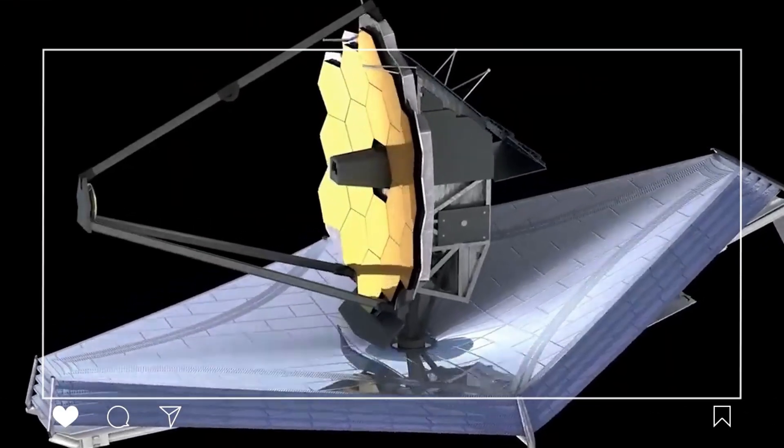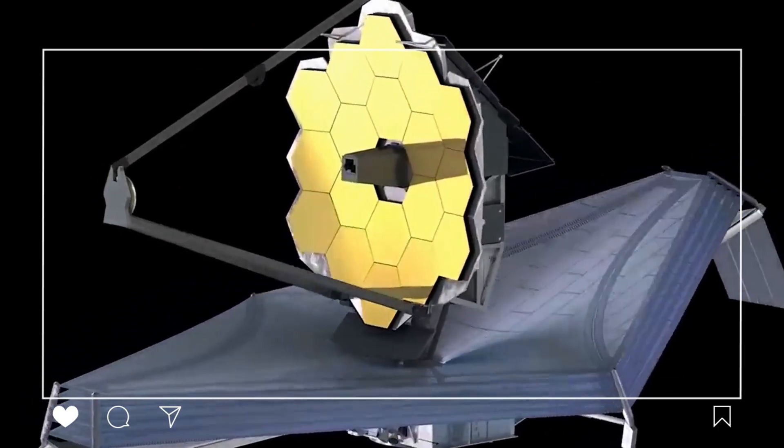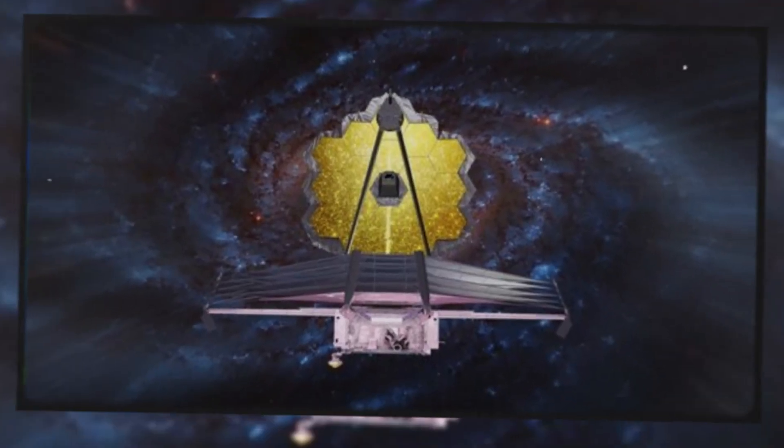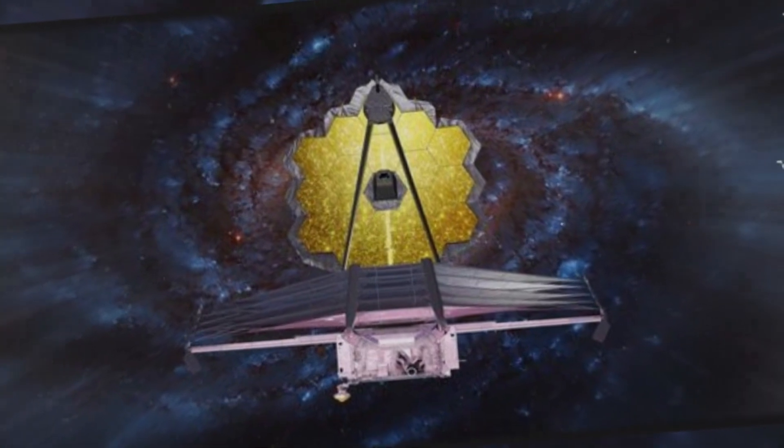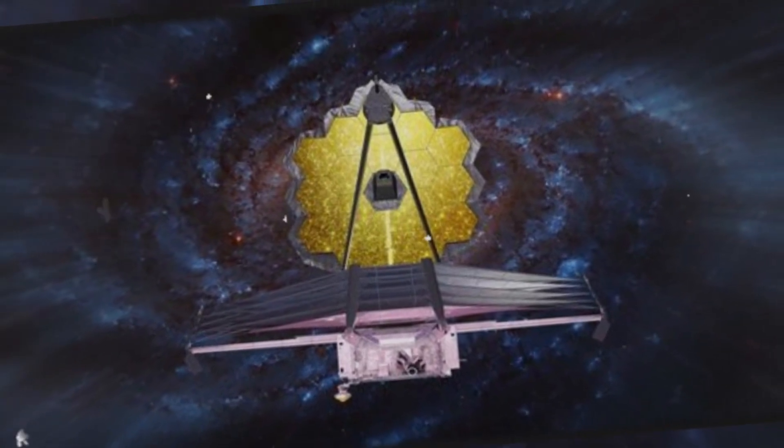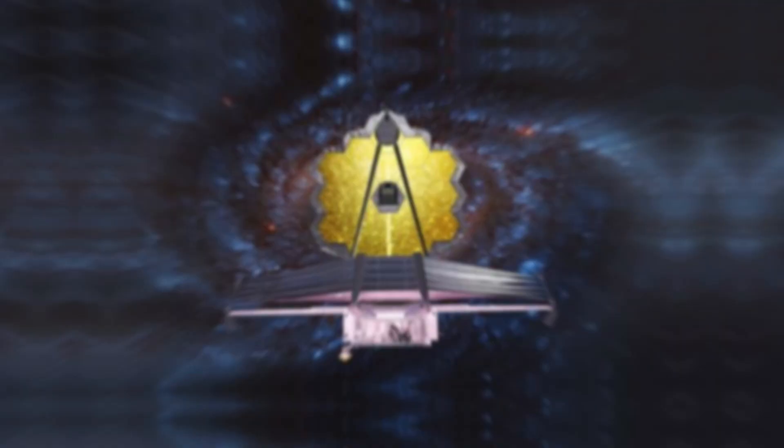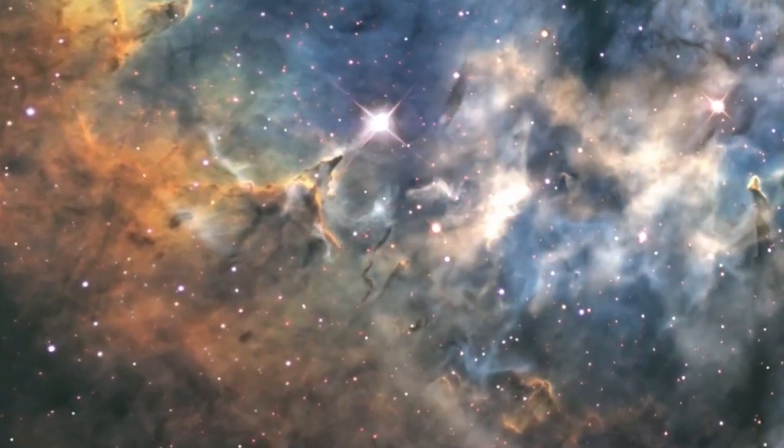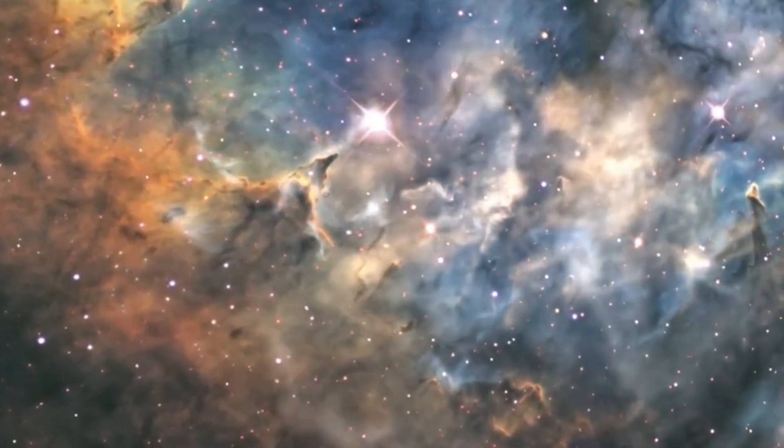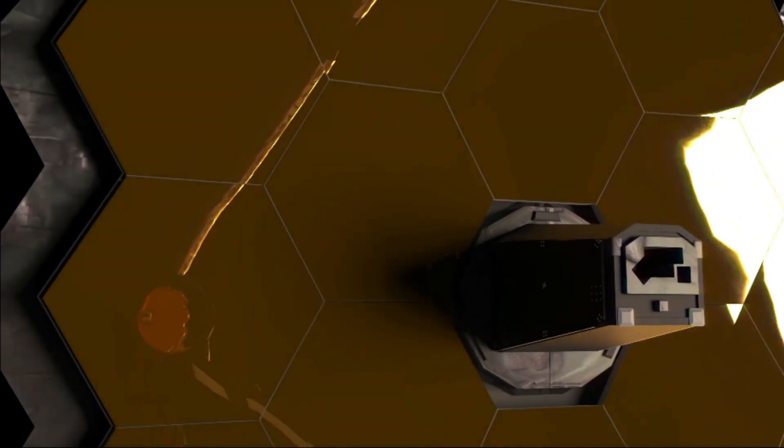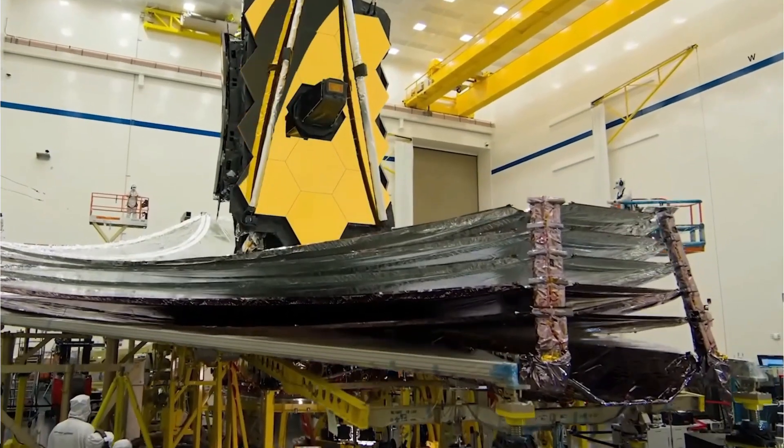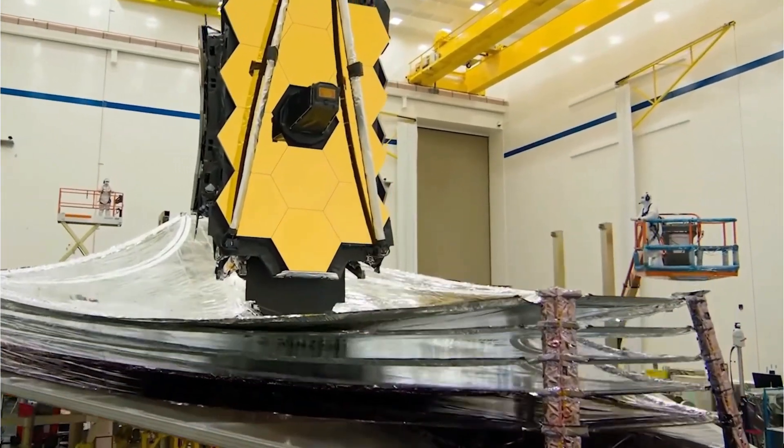Any small mistake in this process could put the over $10 billion investment at risk. All these tests and procedures were essential to confirm that the James Webb Space Telescope was functioning correctly and ready for its mission of exploring the universe. The scientific community's excitement continued to grow as the Webb successfully completed these tests and prepared to embark on its mission of unraveling the mysteries of the cosmos.